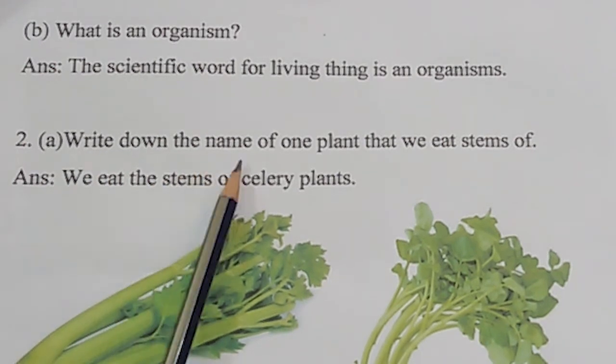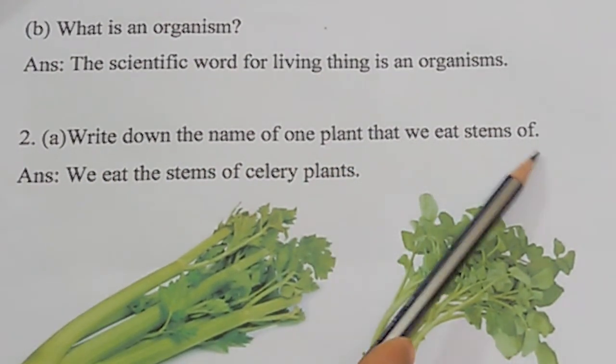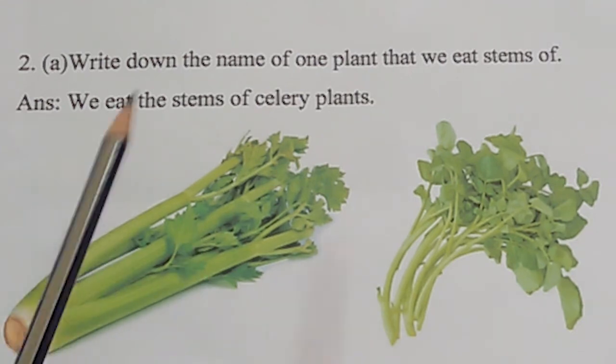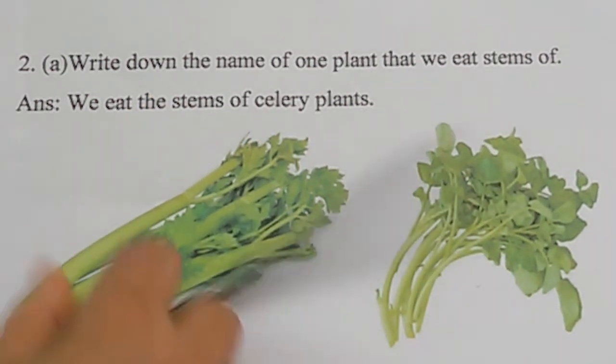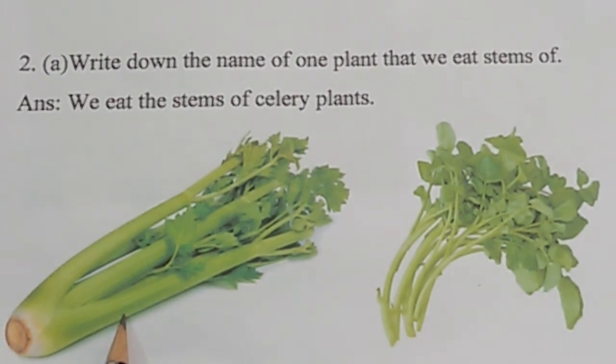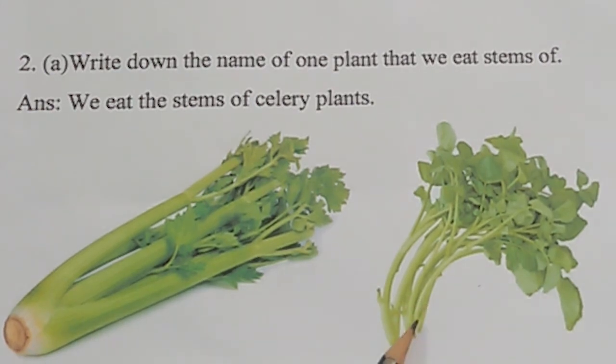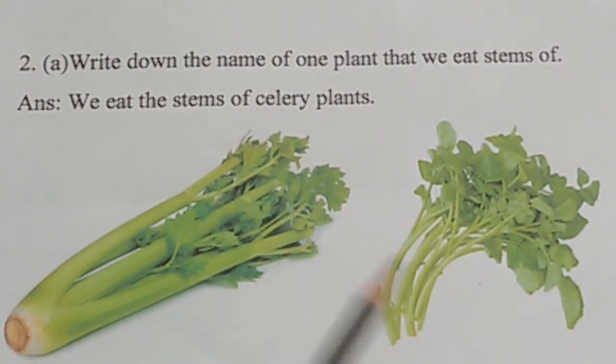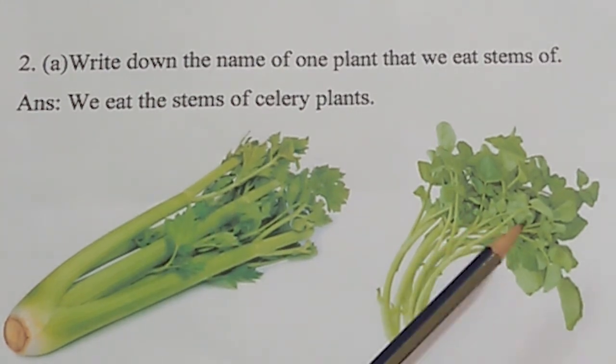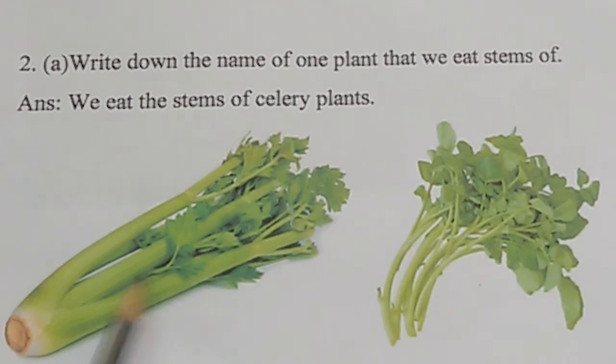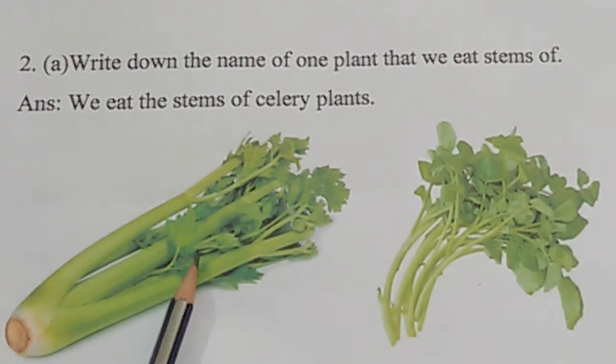Next, write down the name of one plant that we eat stems of. Many of the plants we eat the stems of the plants. Here are two pictures. One picture is celery, another picture is spinach. We eat the stems of celery plants, but we eat leaf and stems both of spinach plant. That's why our answer is celery plants.